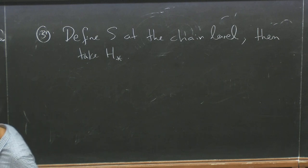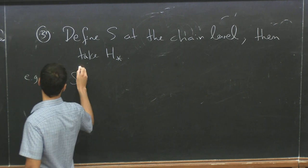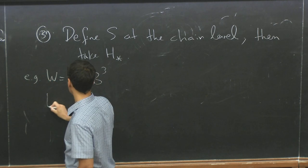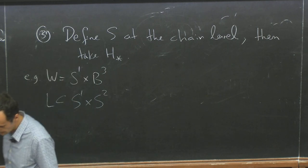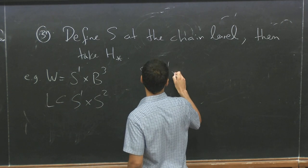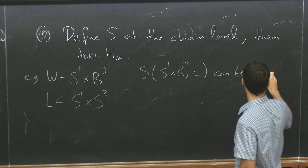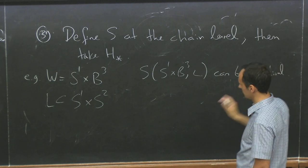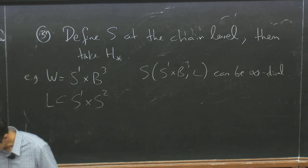And that's why, for example, that's why I think we got something infinite dimensional there. So, we can study this for S1 times B3 and the link in the boundary, which is S1 times S2. And then, we know, we saw that S times S1 times B3L can be infinite dimensional. Which is not what we want. Like, Floer homology, for example, is finite dimensional.